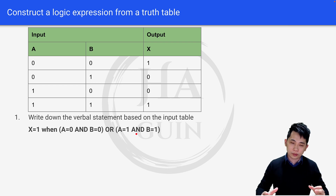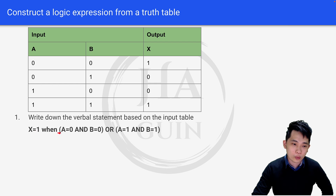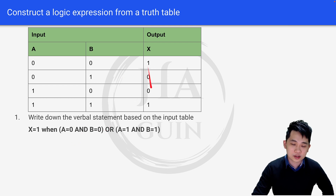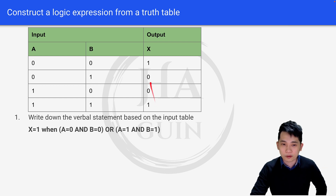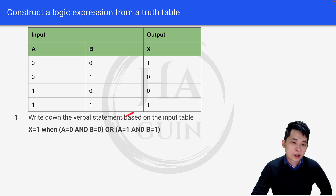Let's go through this verbal statement slowly. When x equals 1 when a equals 0 and b equals 0 — looking at the table, we see 0 and 0 gives output 1 here. Or, when a equals 1 and b equals 1, that also gives output 1. So x equals 1 when a equals 0 and b equals 0, or x equals 1 when a equals 1 and b equals 1. That's how I came up with this statement.